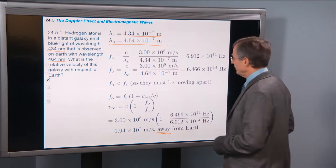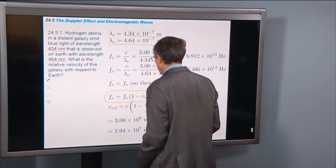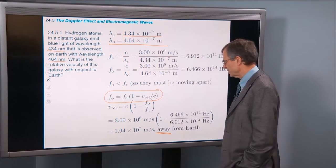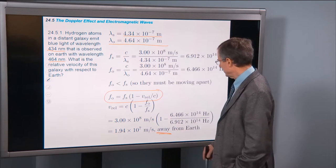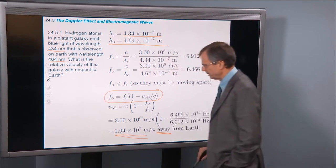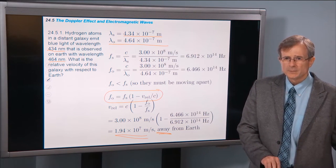So we plug in this equation. It must be moving apart. And we solve that for v_relative. I'll let you do the algebra yourselves. We have everything that we need. And then you can just plug in and find out that the relative speed is 1.94 times 10 to the 7 meters per second.